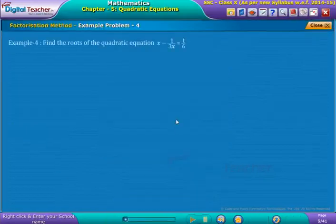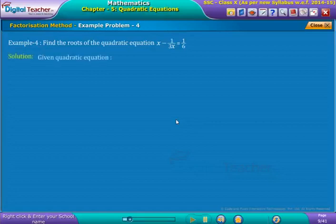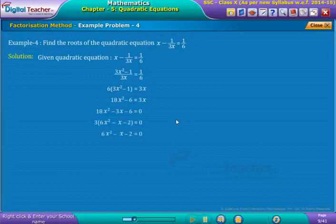Find the roots of the quadratic equation x minus 1 by 3x is equal to 1 by 6. Solution: Given quadratic equation is as shown on screen. By simplifying the equation further, we obtain 6x² minus x minus 2 is equal to 0, which is in standard form.